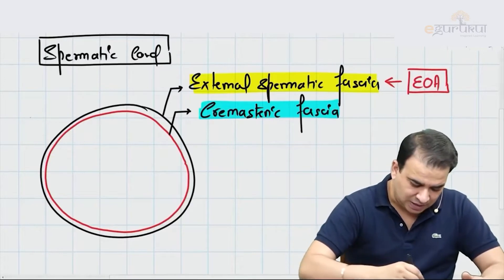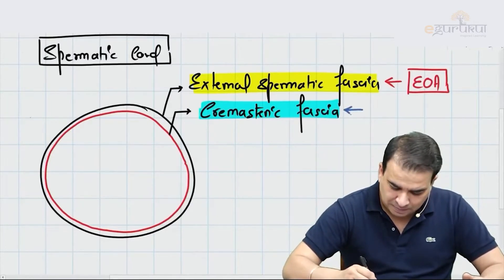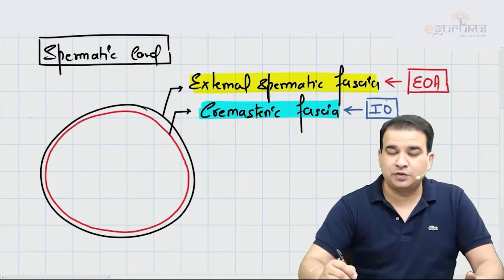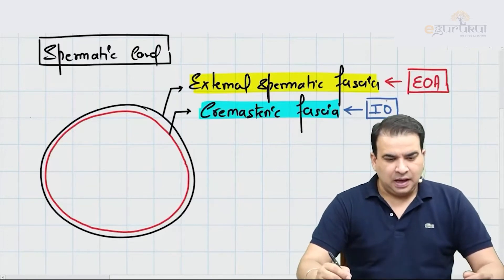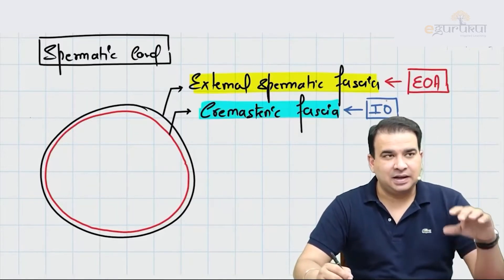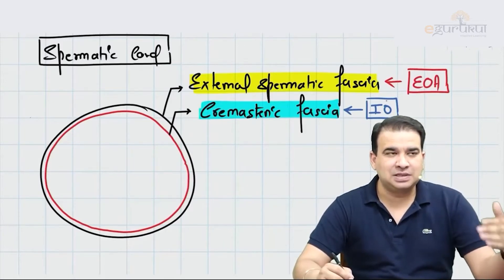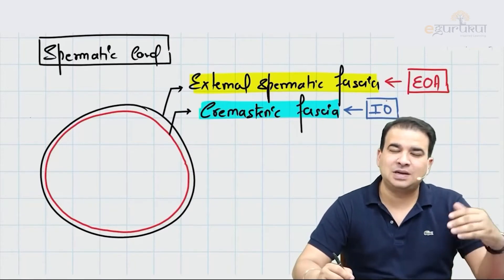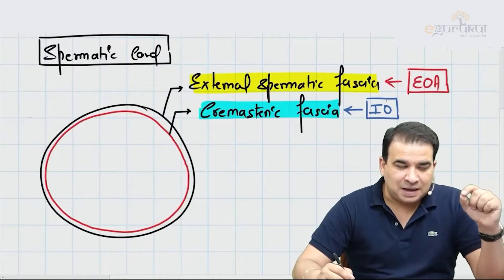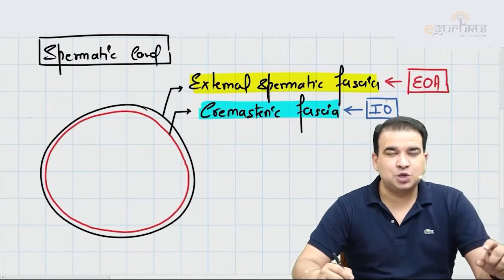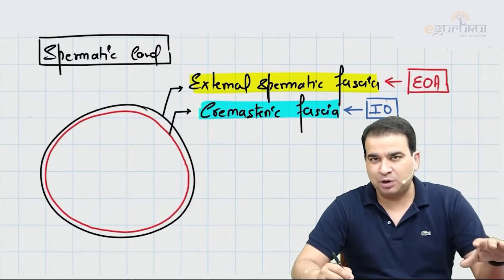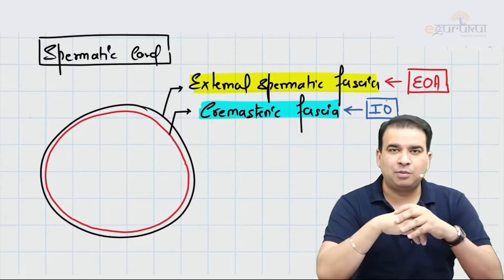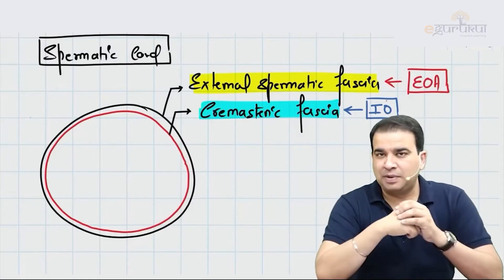The cremasteric fascia is the continuation from the internal oblique — it is a continuation from the internal oblique and is attached to the conjoined tendon. Please understand that the cremasteric muscle is attached to the conjoined tendon, but the conjoined tendon is made up of internal oblique as well as transverse abdominis — the cremasteric muscle is an extension of the internal oblique muscle only and not the transverse abdominis.